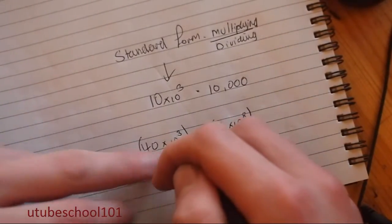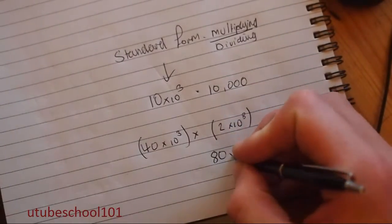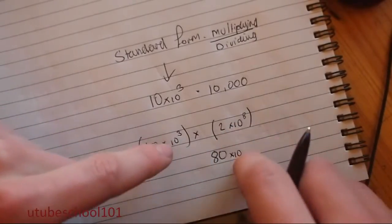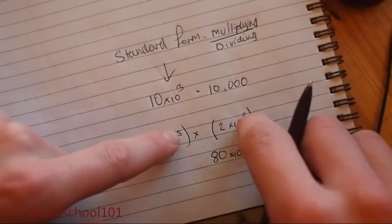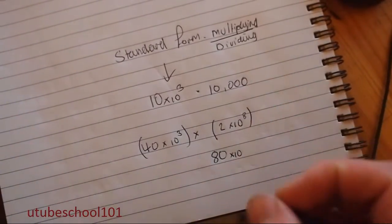And then you get the powers, which is times 10. Sorry, the times 10 bit here. And then you add to the power of. So 3 add 8 is 11.